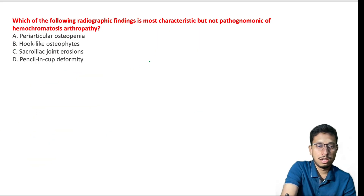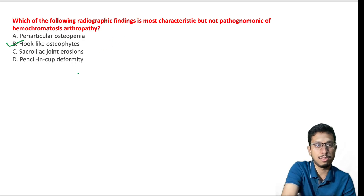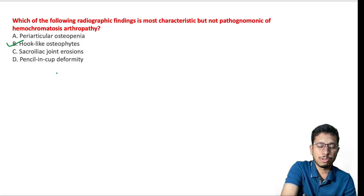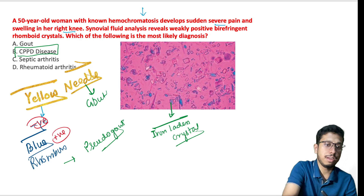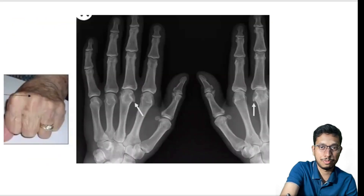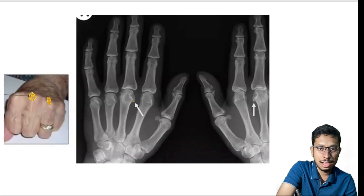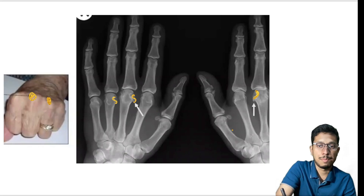The next question asks which radiographic finding is most characteristic but not pathognomonic of hemochromatosis arthropathy — it is the hook-like osteophytes, as discussed. You can also see chondrocalcinosis, and synovial fluid is non-inflammatory. Additionally, on careful examination the synovial fluid will contain iron-laden crystals. As seen in images, there is hook-like formation in the second and third MCP joints which are easily tender.